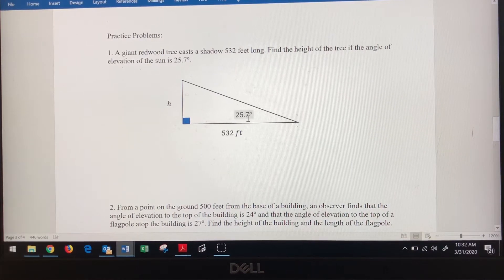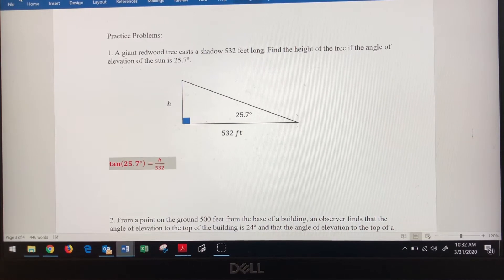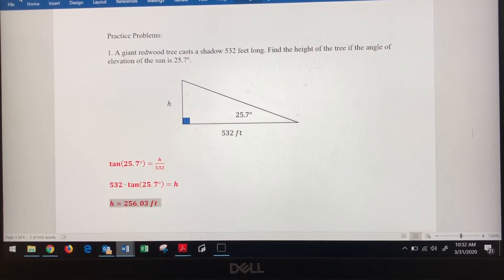So because we've got this angle, we know opposite, we know adjacent, we're gonna write an equation. We get tangent of 25.7 equals h over 532. You guys know how to solve that now. We're gonna multiply both sides by 532 and that gives us an approximate height of 256.03 feet.